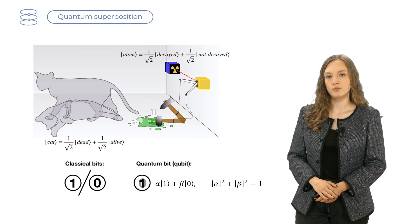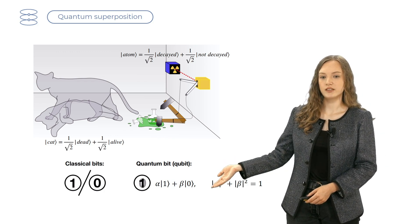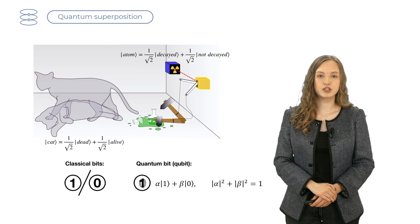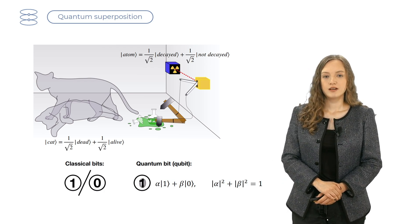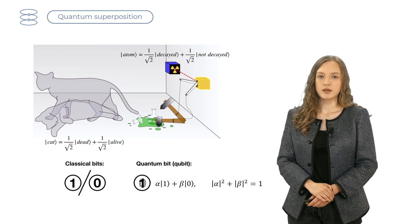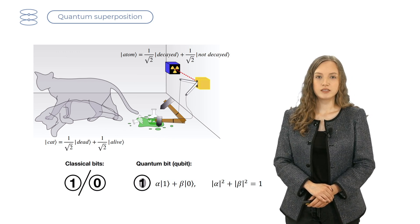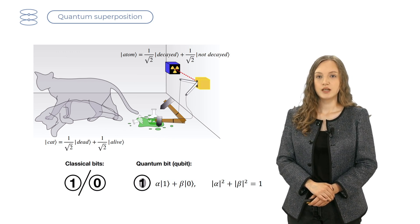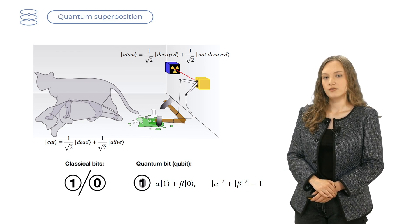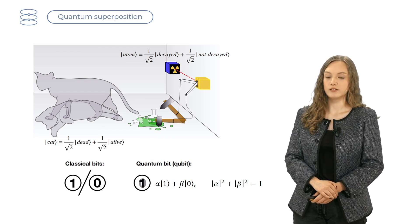So, a state of quantum bit or a qubit can be written as an arbitrary combination of 1 and 0. For example, α times |1⟩ plus β times |0⟩, where the sum of α² and β² has to be equal to 1.